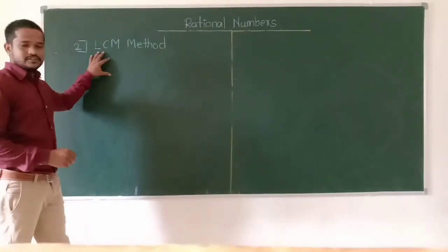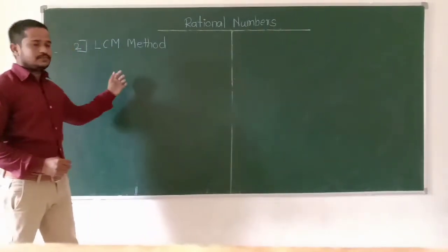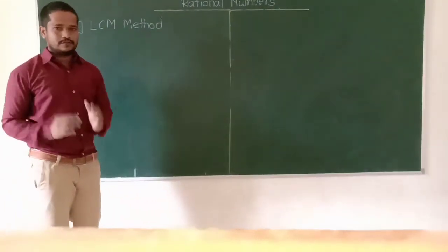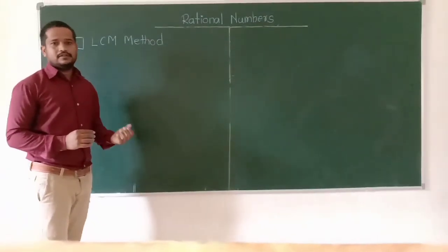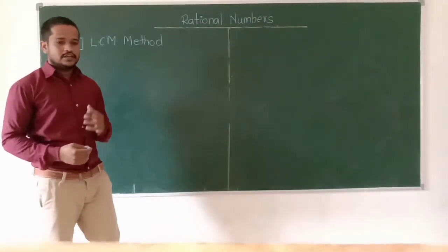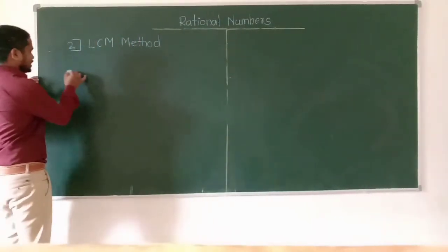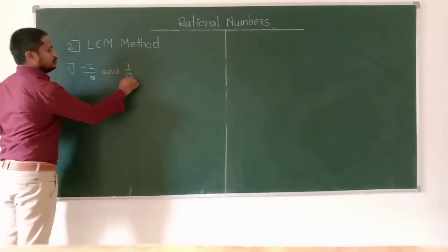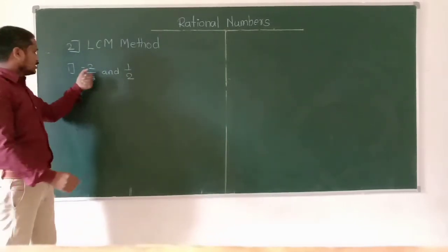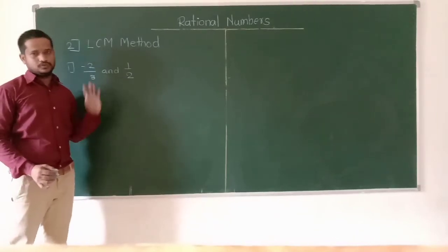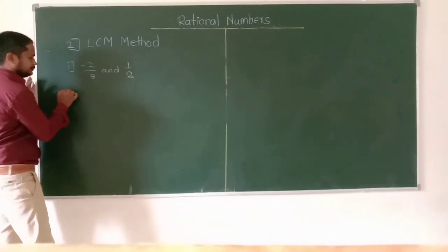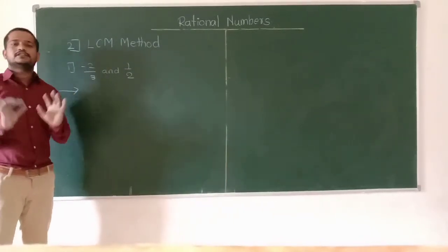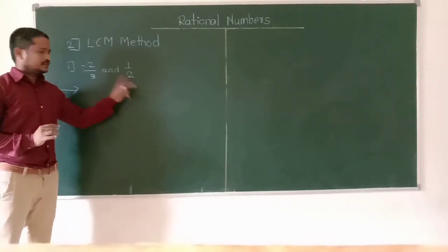Now the second method is the LCM method. LCM stands for least common multiple. In this method, once the denominators of the rational numbers become the same, we can write as many rational numbers between the two given rational numbers as we want. Let's take an example directly: find three rational numbers between minus 2 upon 3 and 1 upon 2. The first thing to do is find the LCM of the denominators.